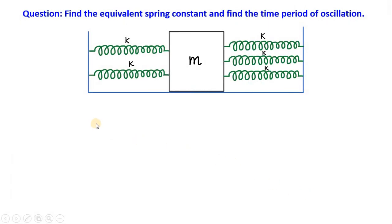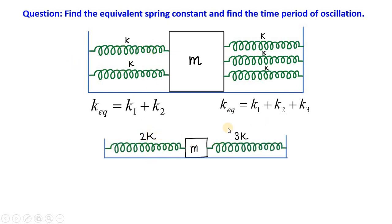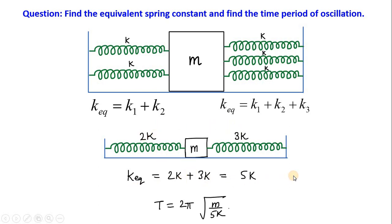Let us now apply this concept to a question: find the equivalent spring constant and the time period of oscillation. On the left-hand side we have two springs in parallel, and on the right side we have three springs in parallel, all having the same spring constant k. In parallel combination, k equivalent on the left side will be k plus k equals 2k, and on the right side k plus k plus k equals 3k. So we can draw the figure with a left-hand side spring constant 2k and right side 3k. This combination is similar to the parallel combination, so the total equivalent spring constant will be 2k plus 3k equals 5k. Therefore, the time period of oscillation given by the formula 2 pi root m upon k equivalent gives 2 pi root m upon 5k.